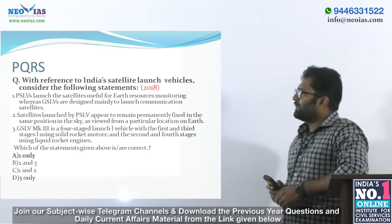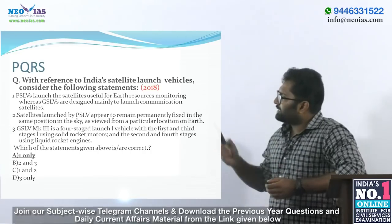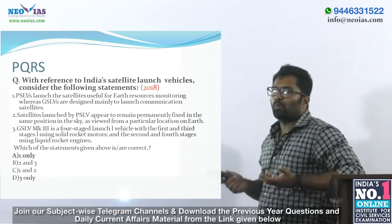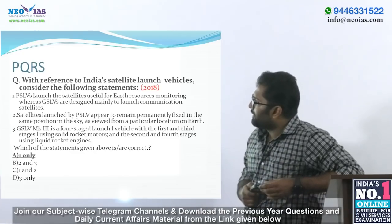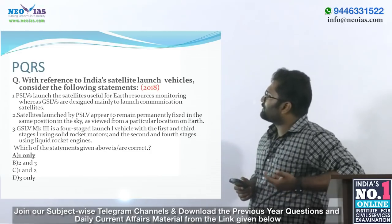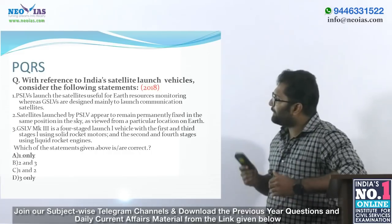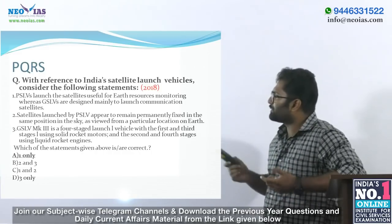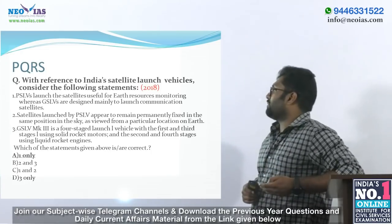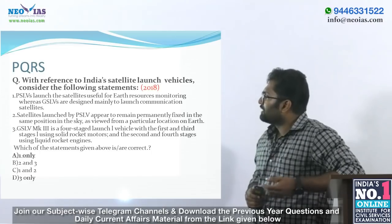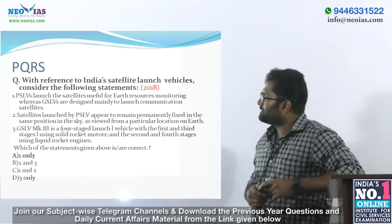Moving on to PQRS — Previous Question Revision Series. Today we discuss a question from the 2018 prelims examination on science and technology, about India's satellite launch vehicles. The question has three statements: Statement 1 — PSLVs launch satellites useful for earth resources monitoring, whereas GSLVs are designed mainly to launch communication satellites. Statement 2 — satellites launched by PSLV appear to remain permanently fixed in the same position in the sky as viewed from a particular location on earth. Statement 3 — GSLV-MK3 is a four-staged launch vehicle with the first and third stages using solid rocket motors and the second and fourth stages using liquid rocket engines.